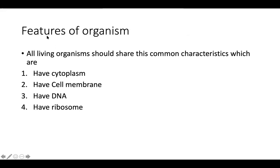All living organisms share common features regardless of what they are — human, animal, plant, or bacteria. All of them should have cytoplasm, cell membrane, DNA, and ribosome. Ribosome is something found in the cell that produces protein. If the exam asks about the features of living organisms, you can write these four things.